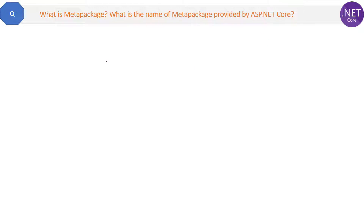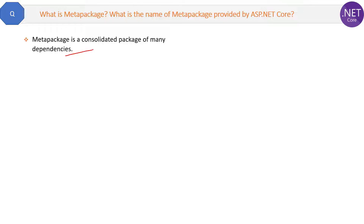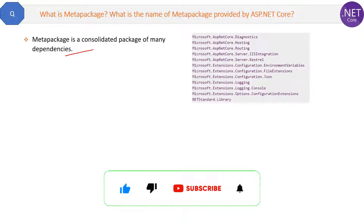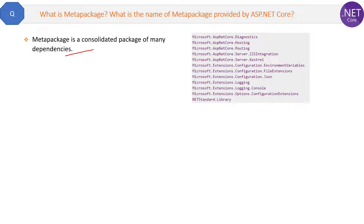Let's see some points about meta packages. A meta package is a consolidated package of many dependencies. Here is the list of dependencies which are consolidated in one meta package in an ASP.NET Core project.